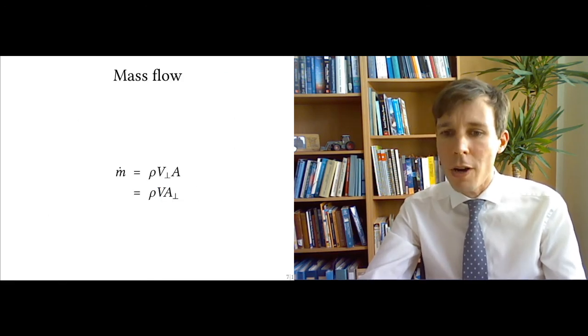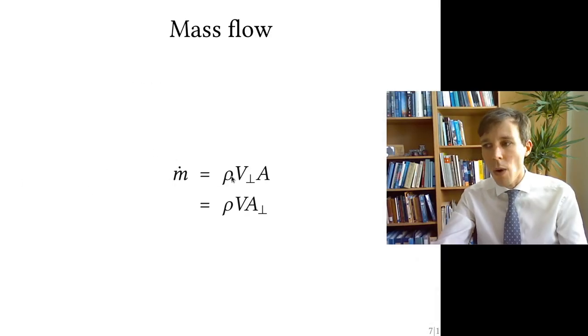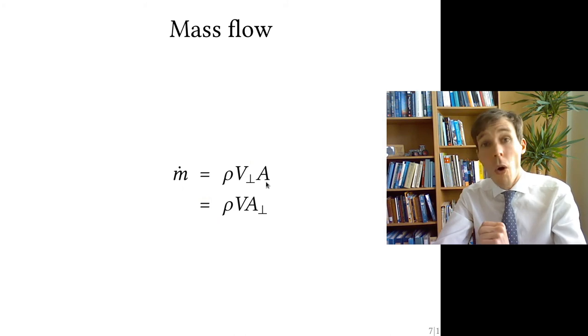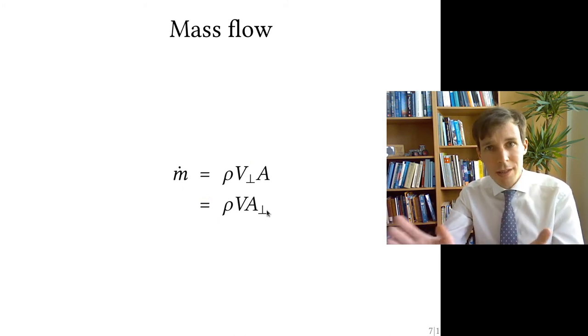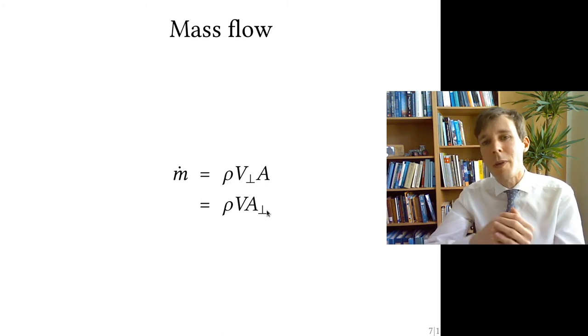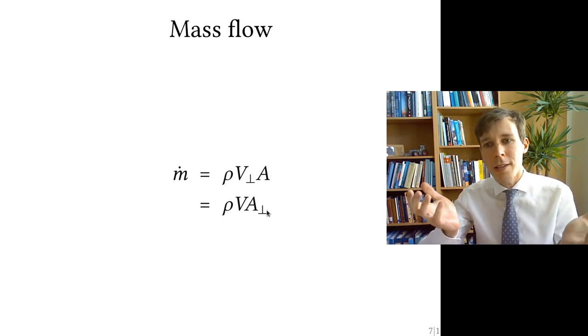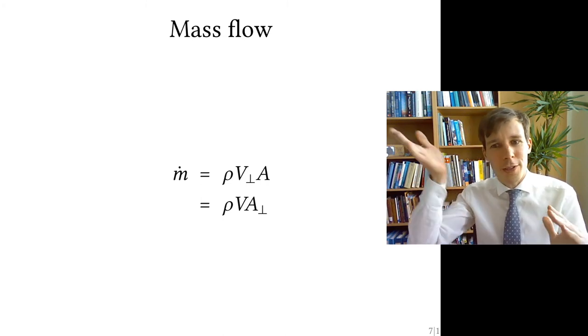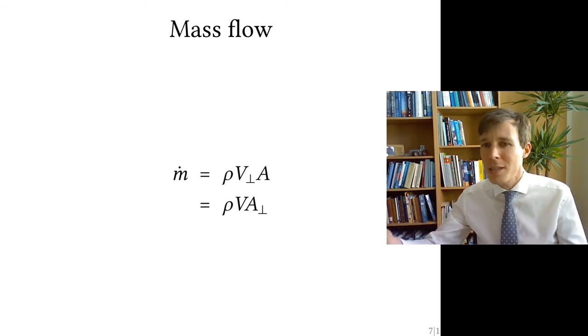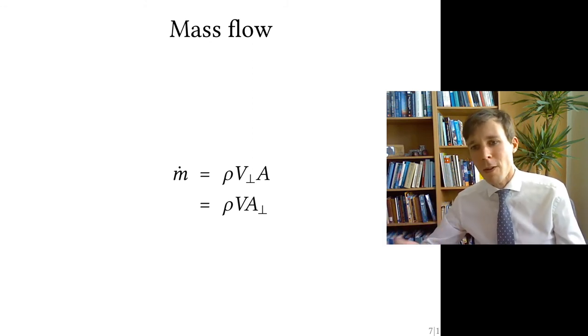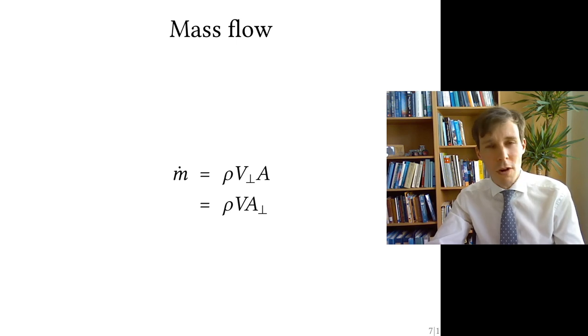So now if you come back to the original equation, you see why we have density here, times V perpendicular A, or V A perpendicular. The point is, area and velocity need to be perpendicular to one another. Otherwise, you get caught in the trick of just having a slanted pipe, because it looks nice, and believing that you have more mass flow, just because of the look of the pipe.